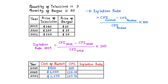For the inflation rate in 2019, we would need the CPI of 2018 as the previous year. However, based on the information in this question, there is no data for 2018, so we cannot calculate the inflation rate for 2019. We place a dash for the inflation rate of 2019.